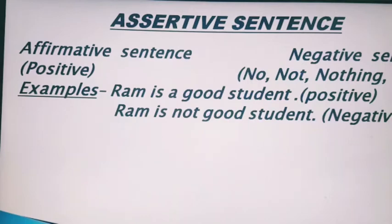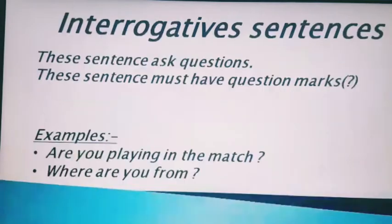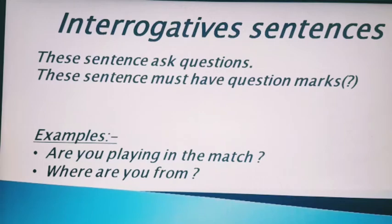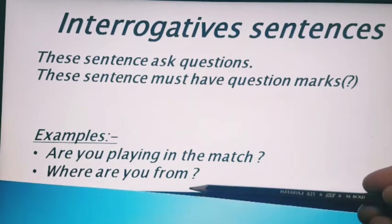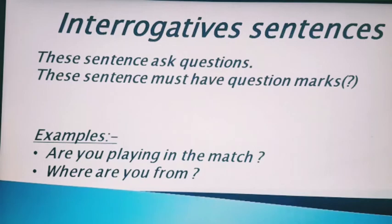Second one is interrogative sentences. Kya conditions honi chahiye jisse aapko pata lag jaye ki yeh interrogative sentence hai? Pehli cheez: ismein question mark hona bahut zaroori hai. These sentences must have a question mark. Second, these sentences ask a question — in sentences mein aapse kuch puchha jaata hai. Like: 'Are you playing in the match?' or 'Where are you from?'